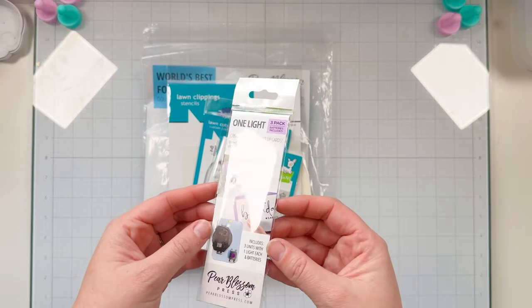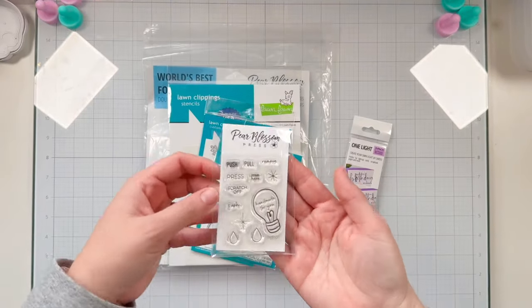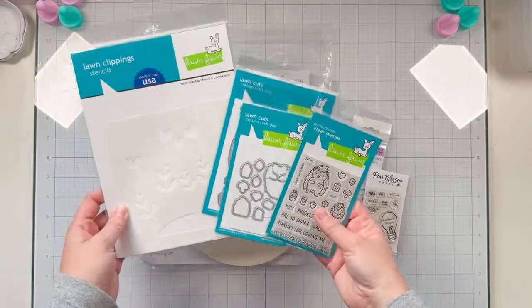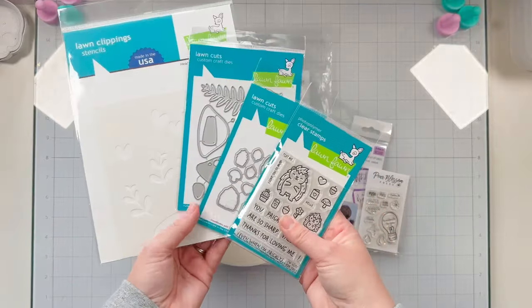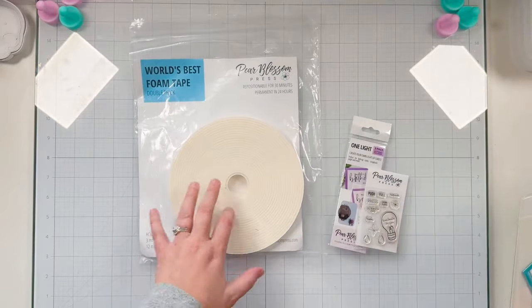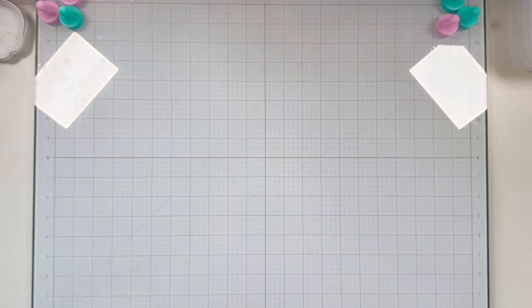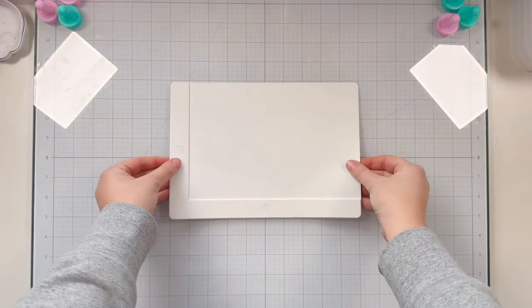I'm going to be showing you my latest Pear Blossom Press project and I have a light-up card to share with you today using Pear Blossom Press's One Light. I'll also be using the Stamp and Die Bundle and of course our world's best foam tape all available at the Pear Blossom Press shop.